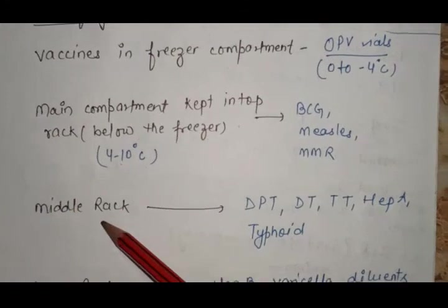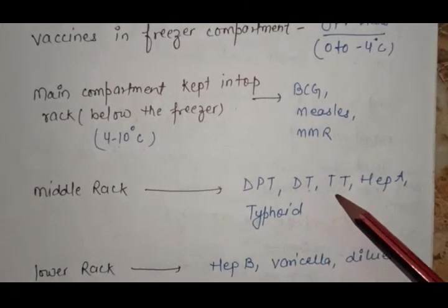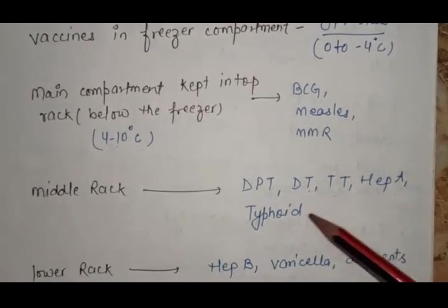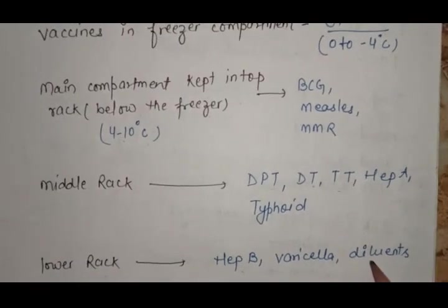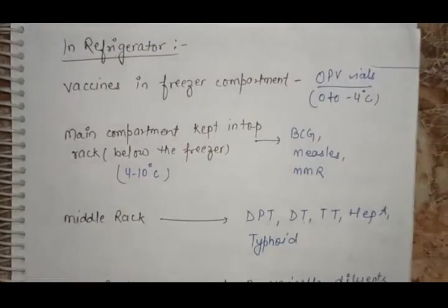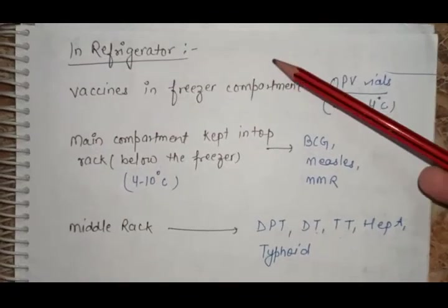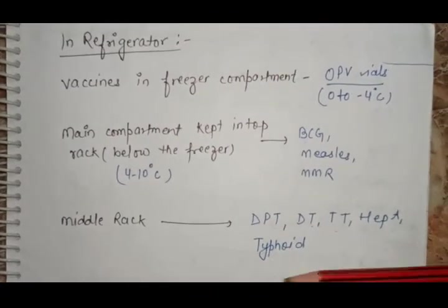In the middle rack, keep DPT, DT, TT, Hepatitis A and typhoid. In the lower rack, keep Hepatitis B and varicella. Diluents are kept on the side of the freezer. This is how to maintain the cold chain in the freezer.